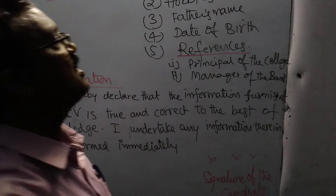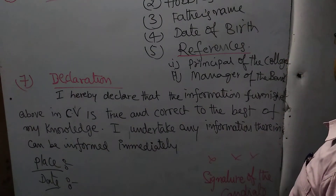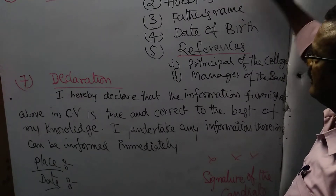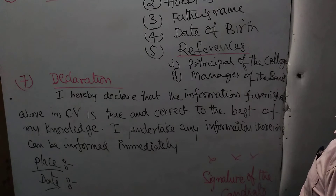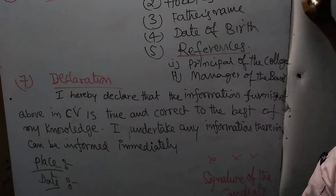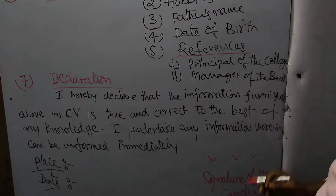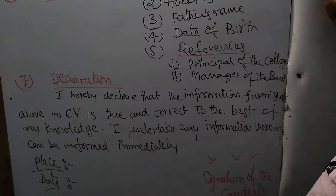One is brief information. Here I am going to write: one is heading — CV, curriculum vitae. Second one, heading means you have to write your address: your name, door number, street name, district. Next, phone number, cell number, email. The second section is objective.